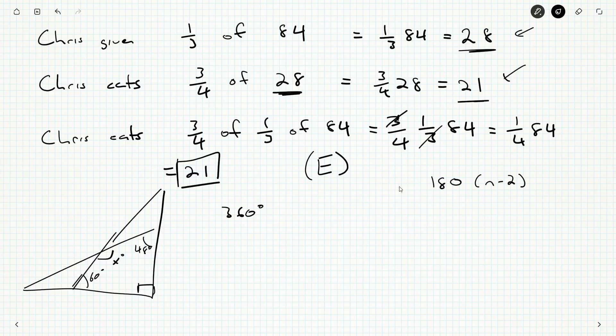So for a pentagon, where n is 5, five sides, we get five minus three, and you'll get 540 as the sum of the angles. And that's a nice little formula to know.